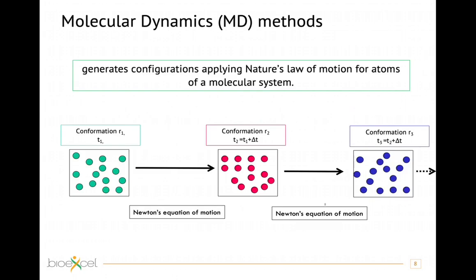One method to generate conformations is molecular dynamics simulation. Molecular dynamics generates conformations by applying Newton's equation of motion. We start from a conformation at time t1, apply Newton's equation — which relates the acceleration acting on a particle to the force and mass of the particle — and when we get the acceleration, knowing the time interval, we can get the new velocity and the new position of the atoms. In this way we go from conformation 1 at t1 to conformation 2 at time t2, where t2 equals t1 plus delta t. We can thereby generate an ensemble of conformations with a time dependency.